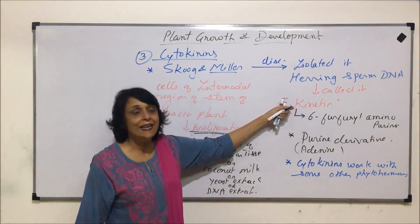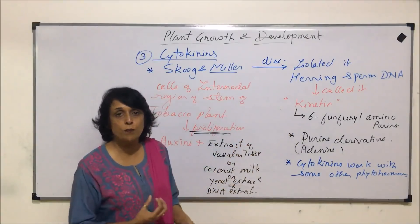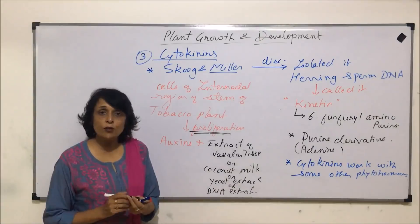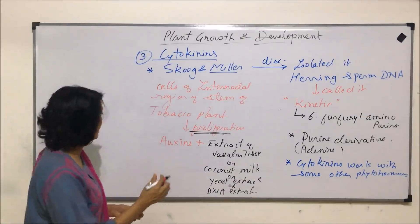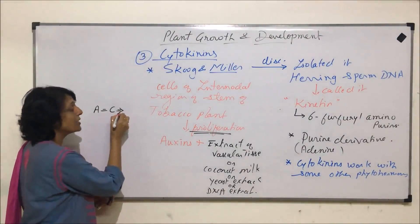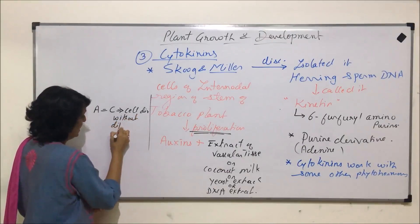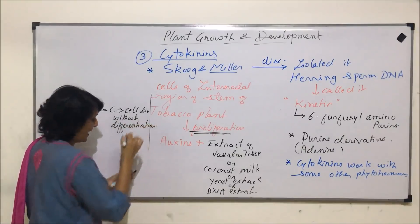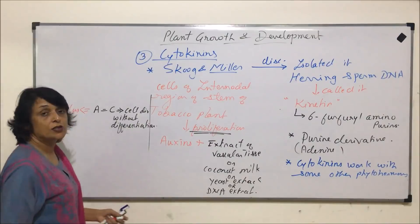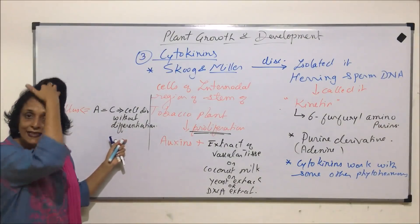Skoog and Miller named it kinetin, isolated it from herring sperm DNA, and its chemical nature was that of a purine derivative — 6-furfuryl amino purine. These cytokinins with auxin in different proportions show different results. When auxin and cytokinin concentrations are equal, this promotes simple cell division without differentiation. That is why this combination is used during tissue culture when only cell division has to take place in the nutritive media — auxins and cytokinins are added in equal concentration.